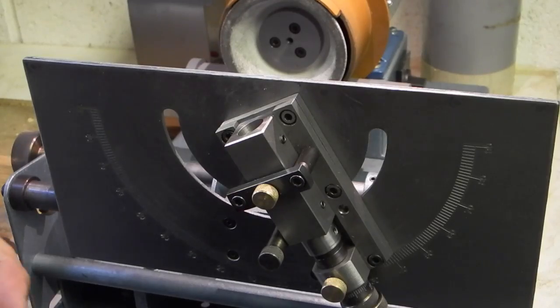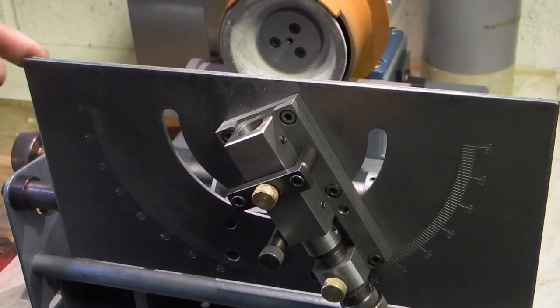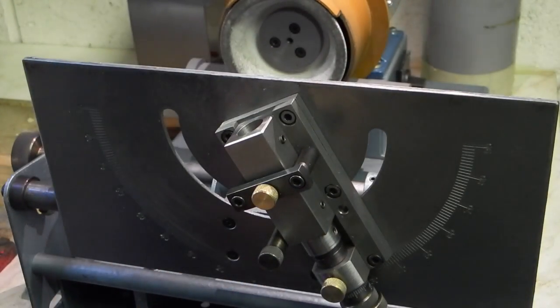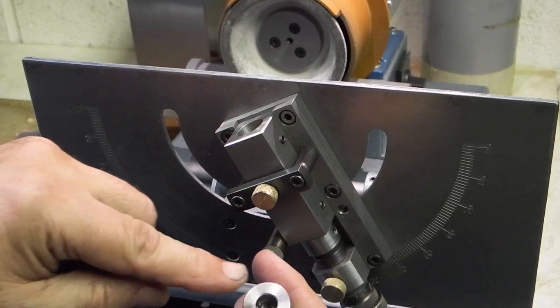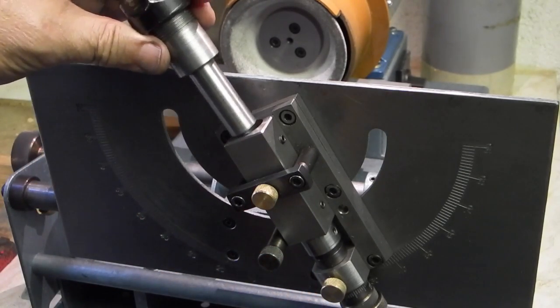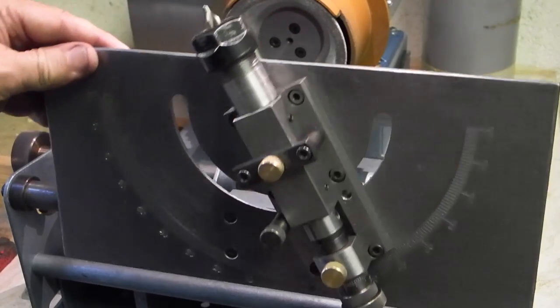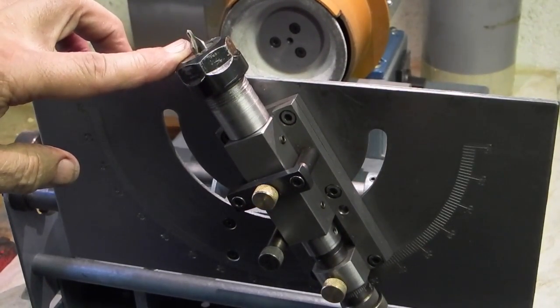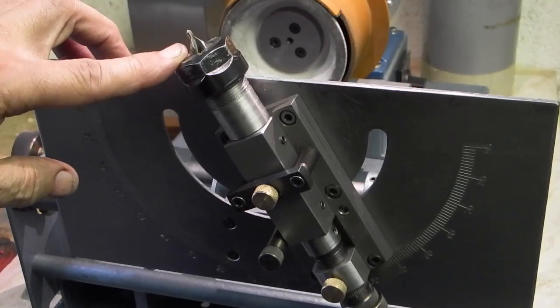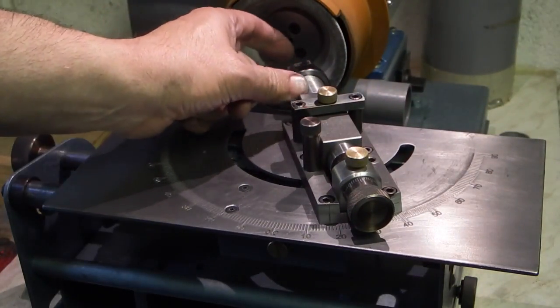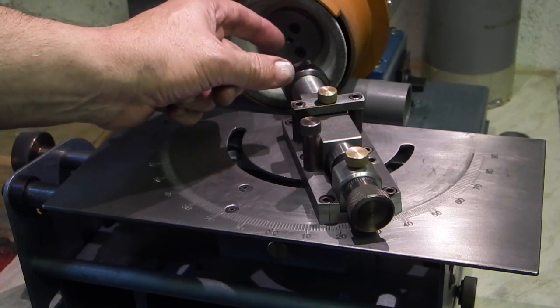If you're wondering what this is for, it's a tool and cutter grinder, and this is the standard tool holder. Normally you make bushes like that for each diameter tool. What I've done is made that, which fits in there. Now I can put any size drill in there up to half inch, as long as the length is within the grinding distance.